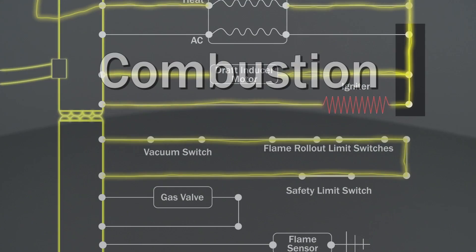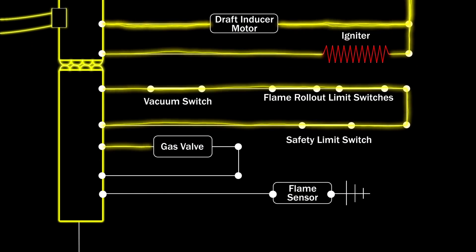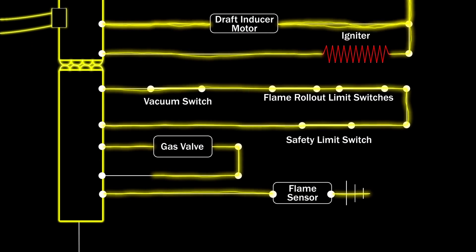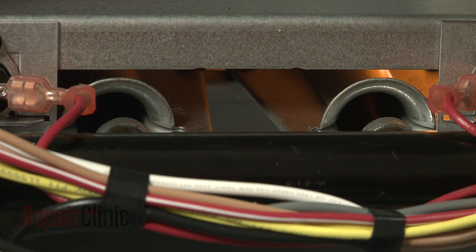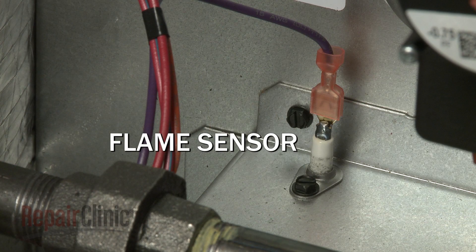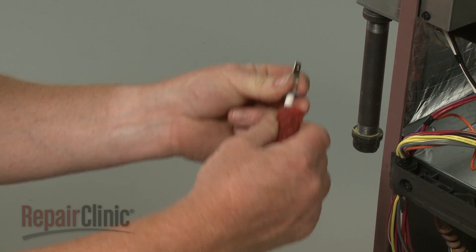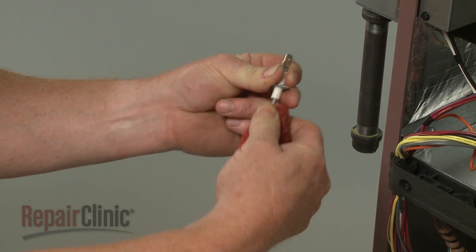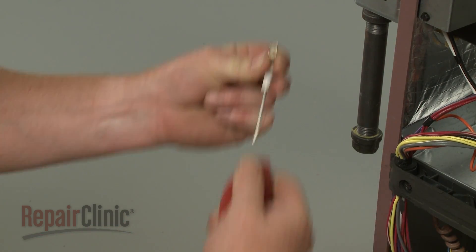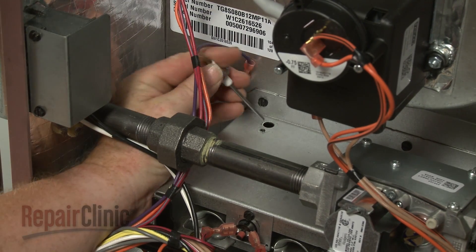After a set period of time, the control board sends 24 volts to the gas valve, opening it and allowing gas to flow over the igniter, establishing a flame. Once the gas is ignited, a flame sensor detects whether or not a flame is present. If the burners do not light or will not stay lit, the flame sensor may need to be cleaned with a fine abrasive pad to ensure it can detect the flame, or the sensor may need to be replaced.